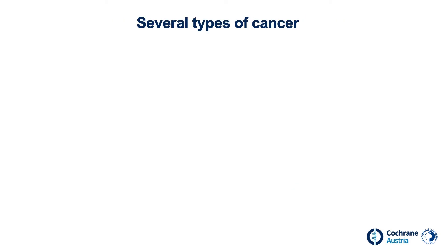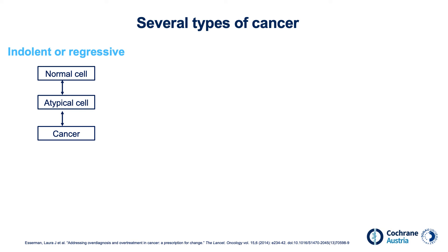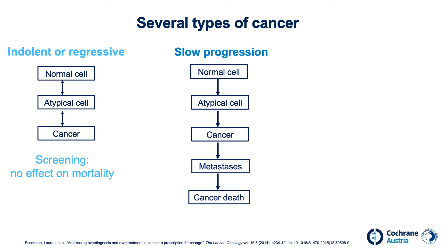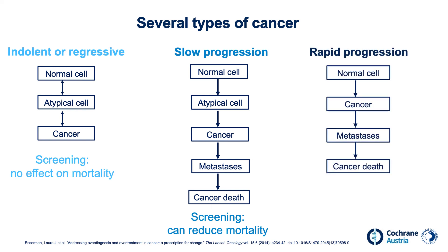Cancer covers a spectrum of tumors that grow at different rates, from those that are harmless and hardly grow or even regress, to fast-growing tumors. Indolent tumors do not grow at all or grow very slowly or even regress — they are often discovered during autopsy studies. For example, studies on deceased men show that 9 out of 10 men have prostate cancer that was not diagnosed during their lifetime. Screening has no effect on mortality in patients with indolent tumors. With slow-growing tumors, there is a chance that screening has benefits — for example, removing polyps during colonoscopy reduces the risk of colorectal cancer. Rapidly-growing tumors are often not detected by screening but start to grow between screening examinations, so screening has hardly any influence on the course of the disease.